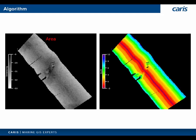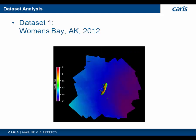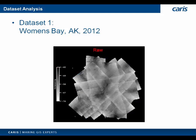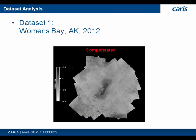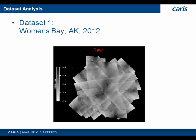Here's the before and after of applying the beam pattern with the difference image on the right. This particular dataset is over a very small patch of seabed, so we don't see any artifacts from the sediment response at this point. Here's the bathymetric surface of the full survey — a reef development survey in Alaska. Here's the raw backscatter before applying corrections, and the final compensated mosaic. Bottom type in such a small area was very consistent, so we didn't need to worry about an angle-bearing gain correction.